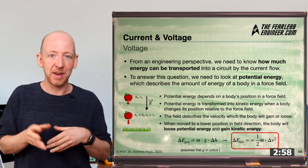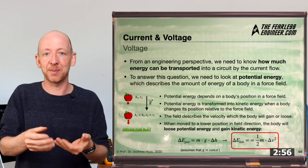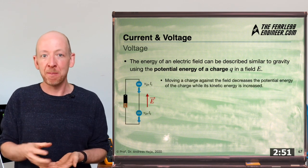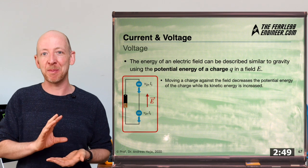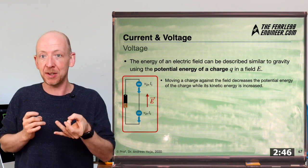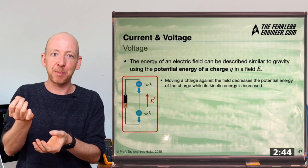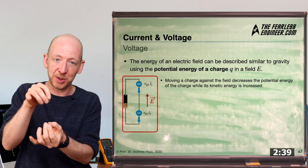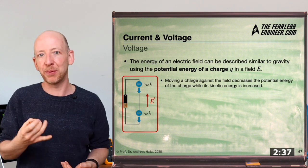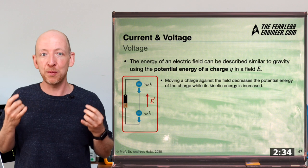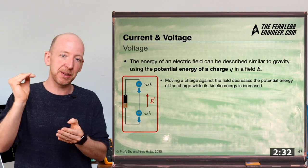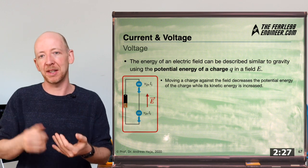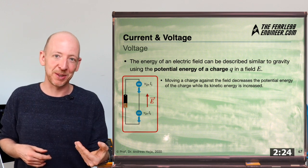When an apple falls from a tree, its potential energy — derived from its height and the gravitational field — is transformed into kinetic energy, meaning speed. Moving a body in the direction of the field causes it to lose potential energy and gain kinetic energy. This is expressed in two equations: potential energy as the product of mass, gravity, and relative height; and kinetic energy as mass times speed squared divided by two. Interestingly, the same conversion mechanism happens inside electric circuits.